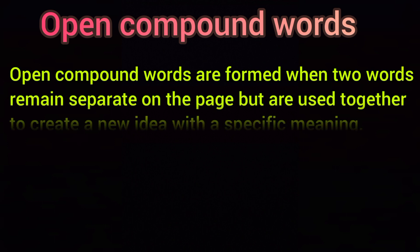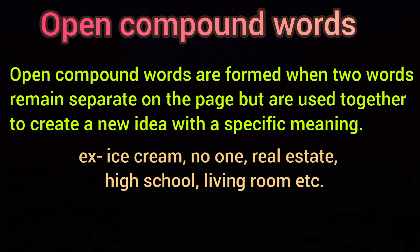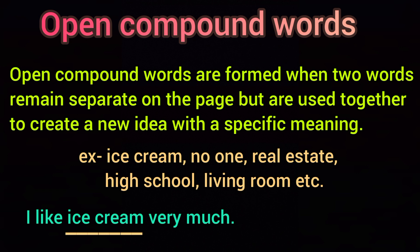The second type is open compound words. Open compound words are formed when two words remain separate on the page but are used together to create a new idea with a specific meaning. For example: ice cream, no one, real estate, high school, living room. In the sentence 'I like ice cream very much,' ice cream is an open compound word where 'ice' and 'cream' are separate on the page.